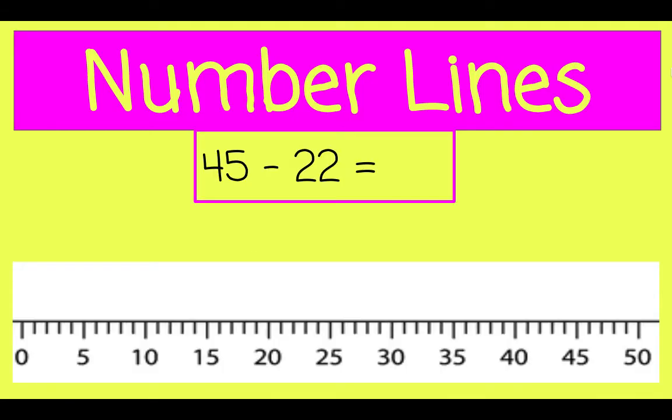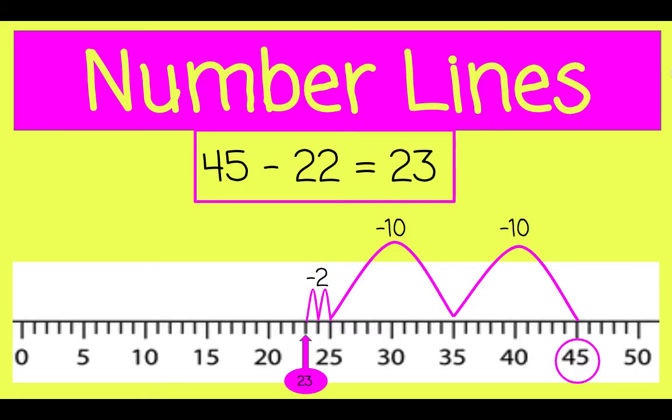Let's look at 45, take away 22. We can make larger jumps. So there's 45. Let's count back 22 jumps. There's a jump of 10, another 10. 21, 22. We landed on 23. So 23 is our difference, or our answer.